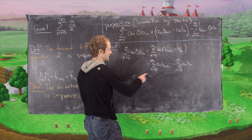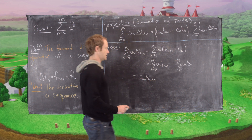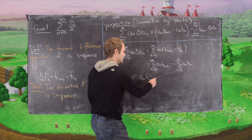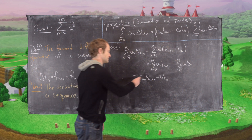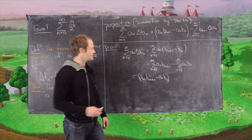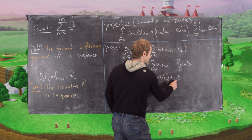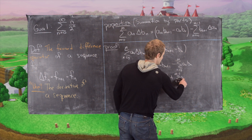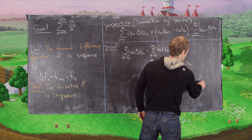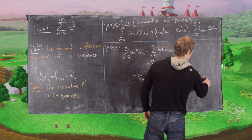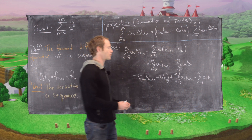The last term out of the first sum is aₘ bₘ₊₁, and the first term out of the second sum is a₀ b₀, attached to a minus sign. We've gained what's in parentheses already. Now we rewrite the sums missing those boundary terms: the sum n equals 0 to m minus 1 of aₙ bₙ₊₁, minus the sum n equals 1 to m of aₙ bₙ.